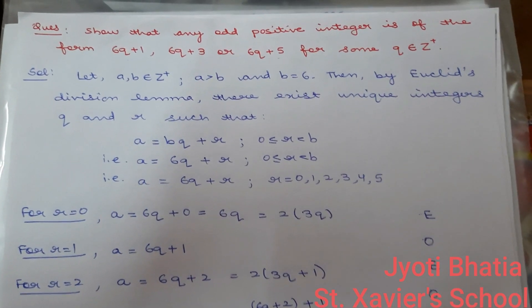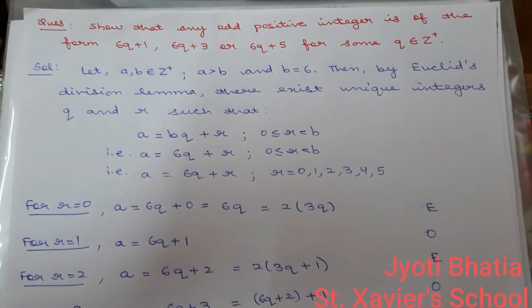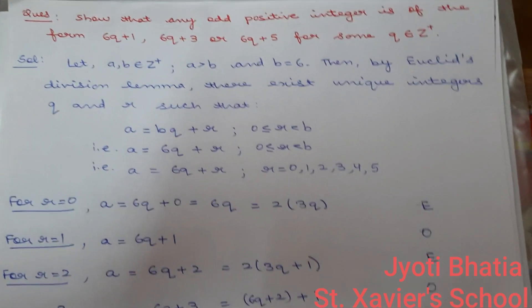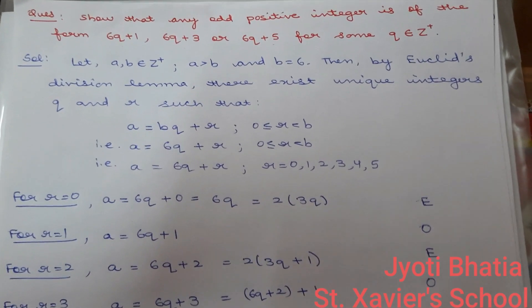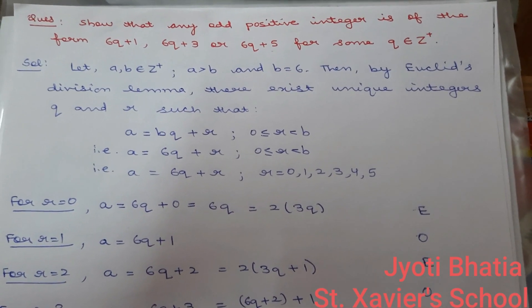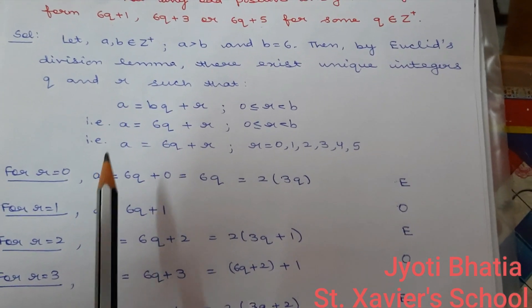Or in another way, if you want to play a game, you can ask anybody to think of an integer. Ask that person to multiply it by 6, add 1, 3 or 5 to it. The result will always be an odd integer. So, let us do it mathematically now.